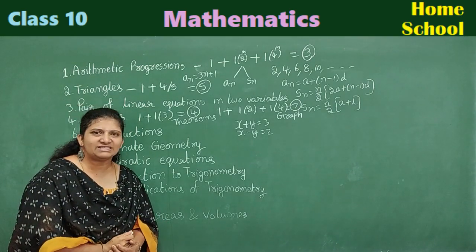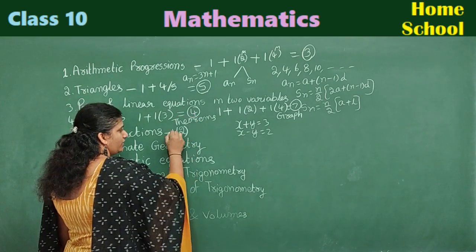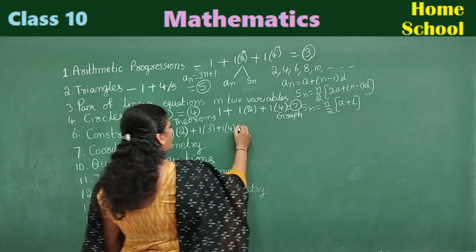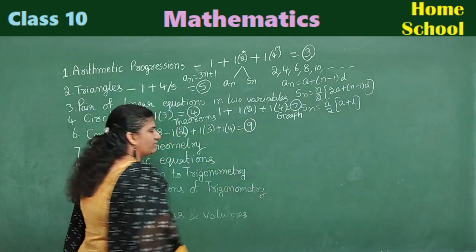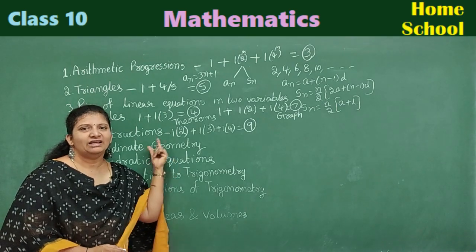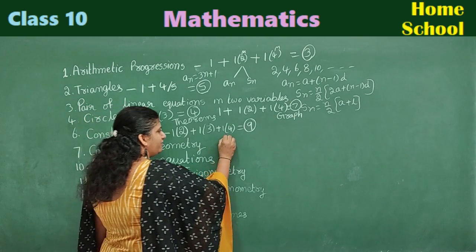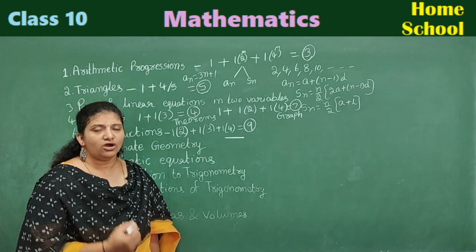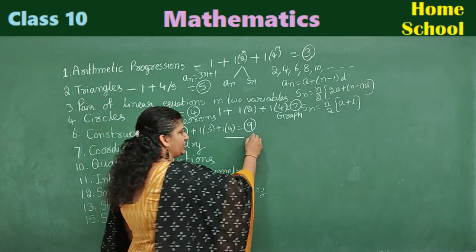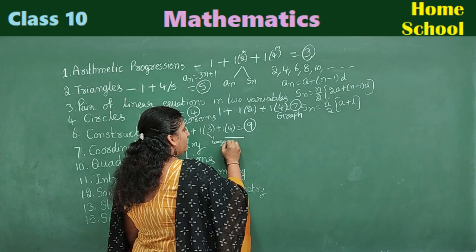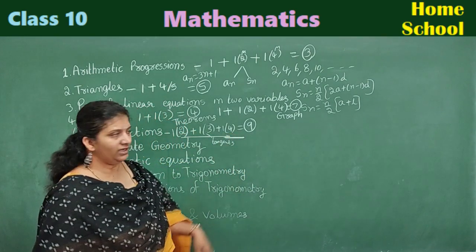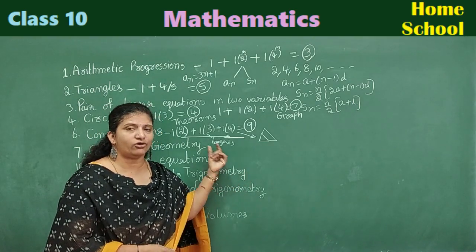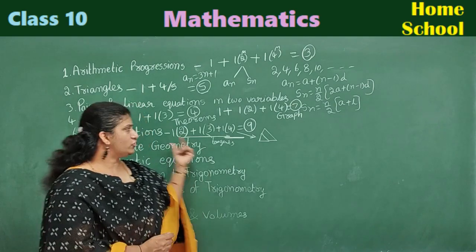Constructions is a chapter where you can easily score. We get one two-marks question, one three-marks question, and one four-marks question — total nine marks expected. The two-marks question will be: divide a line segment in a given ratio. The three-marks question: draw a pair of tangents or tangents from an external point. The four-marks question: draw a similar triangle according to a given ratio.